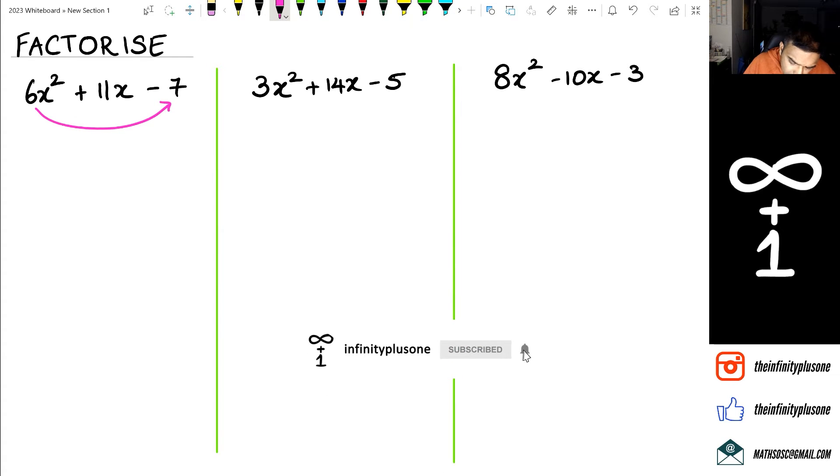All right, so the first step what we're going to be doing here is still quite similar to what we've done before. We're going to multiply those two numbers at the end, but however we're going to write this as x squared plus 11x and 6 times minus 7 is minus 42.